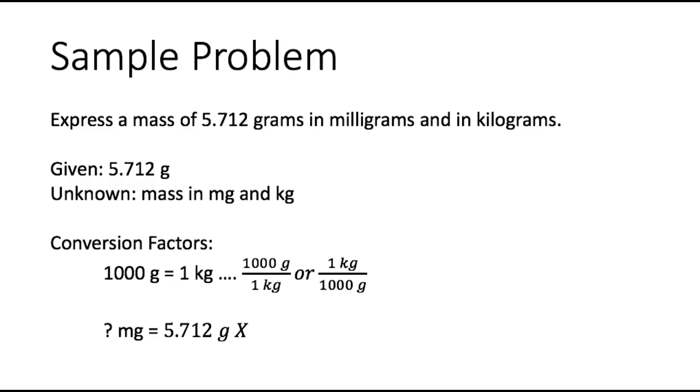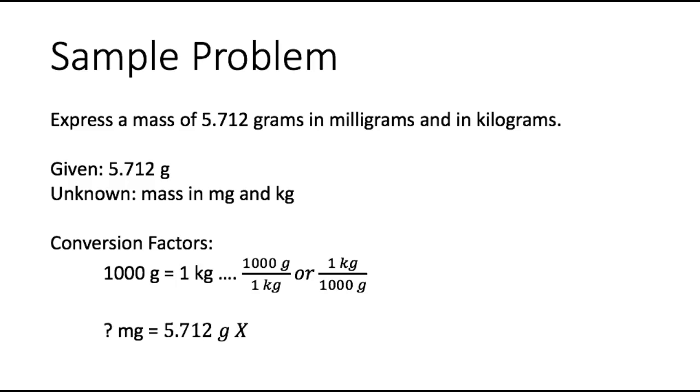Let's look at the next part of our conversion problem, which is converting to kilograms. I want to know how many kilograms equals 5.712 grams. So I can express my conversion factor 1,000 grams equals 1 kilogram as 1,000 grams over 1 kilogram or as 1 kilogram over 1,000 grams. Which one am I going to use?